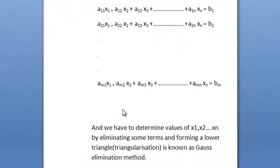Here, to determine the values of X1, X2, X3 and so on up to Xn, first we need to form a lower triangle like this with zeros by eliminating some terms. This process of making a lower triangle is known as triangularization and this method is known as Gauss Elimination Method.